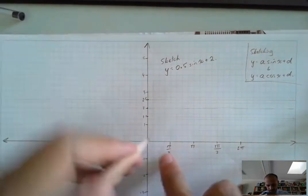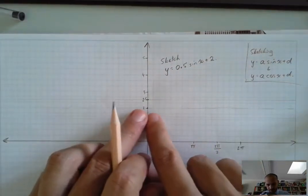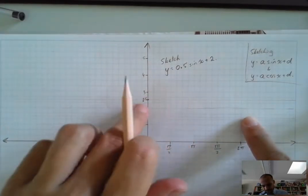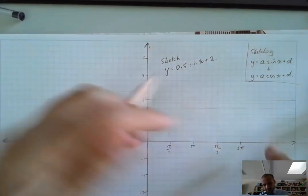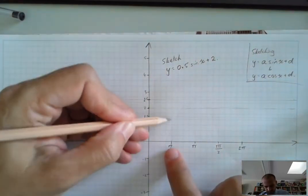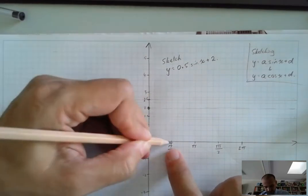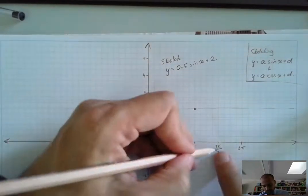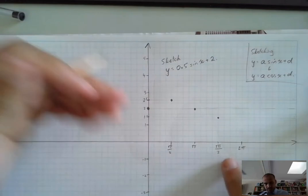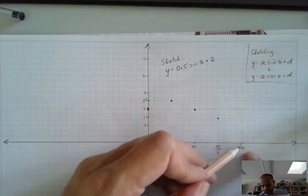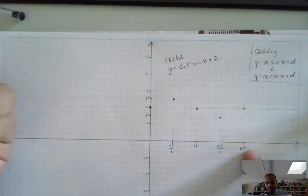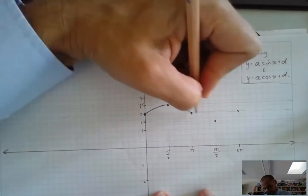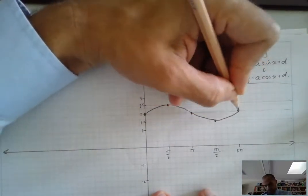My graph is going to have a middle line through here, going up to that line and down to that line. The period is still 2 pi — it still takes 2 pi to go up, back to the center, down, and back. So the sine function starts here, comes up to the top at pi over 2, back to center at pi, down to the bottom at 3 pi over 2, and back up at 2 pi. Joining those dots, keeping it nice and smooth.